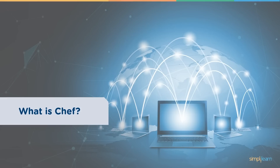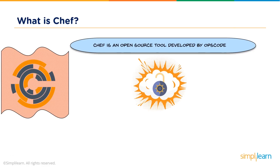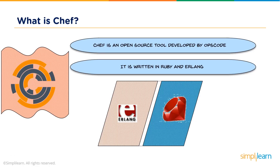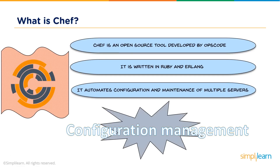Chef is an open source tool developed by Opscode. There are paid versions such as Chef Enterprise, but most of it is freely accessible. Chef is written in Ruby and Erlang. Both languages are used to build Chef, but when it comes to actually writing the codes in Chef it's just Ruby — and these are the codes deployed onto your multiple servers to perform automatic configuration and maintenance.